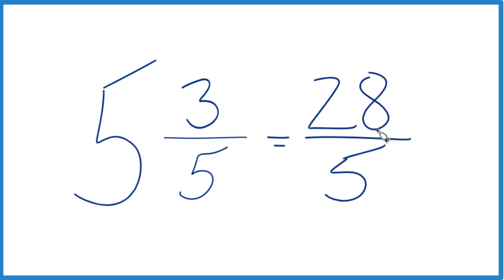28 fifths, that is the improper fraction for the mixed number 5 and 3 fifths. Let's do it again.